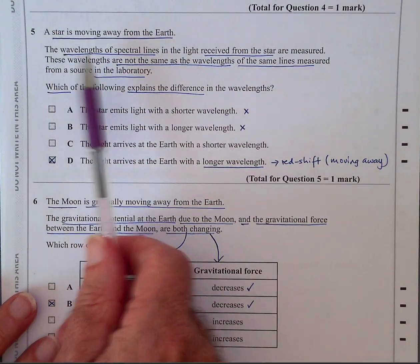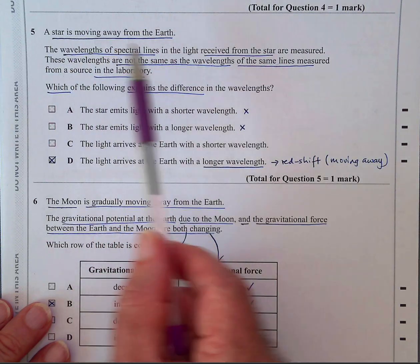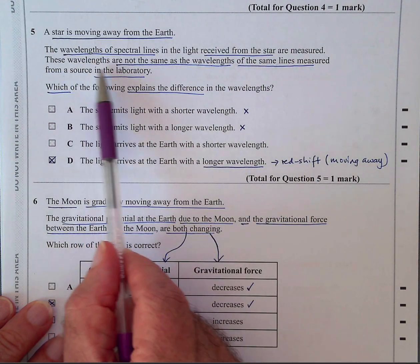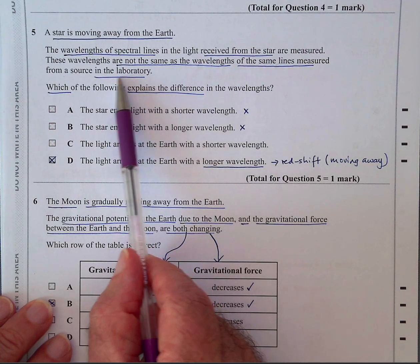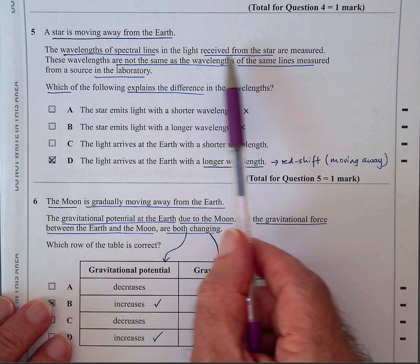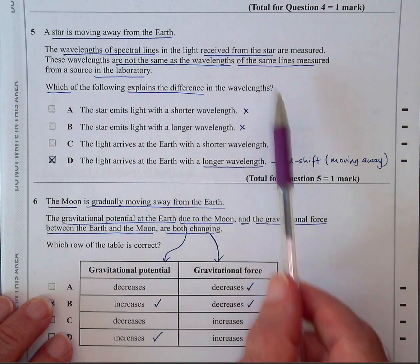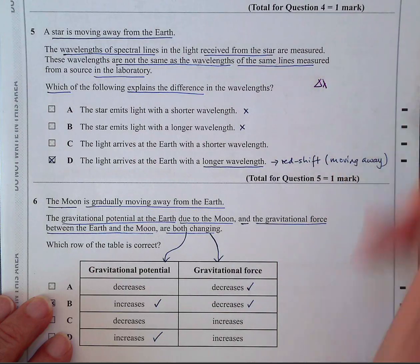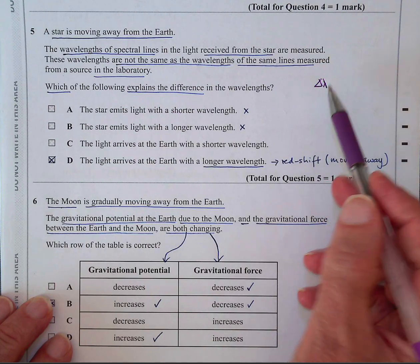Question five, a star is moving away from Earth. So if it's moving away from Earth, we call that redshift. The wavelengths of spectral lines received from the star are measured. So that's when it's moving. The wavelengths are not the same as the wavelengths of the same lines measured in the lab. So this is when they're stationary relative to us, obviously because the lab will be on Earth. And when the same spectral lines are observed in a moving object, the star that's moving away from us, they shift. And the amount of shift, delta lambda, for example, the wavelength changes by a certain amount, allows you to work out the recession velocity, which explains difference in the wavelength.